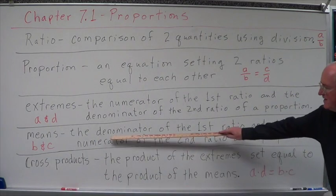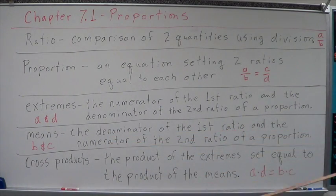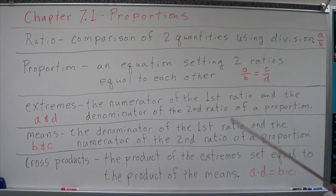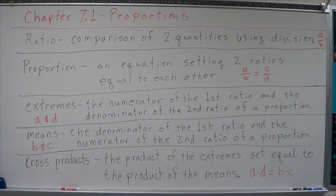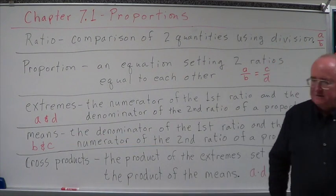The means is the denominator of the first ratio and the numerator of the second ratio of a proportion. Well, that would be B and C. Denominator of the first, numerator of the second. That's called the means.